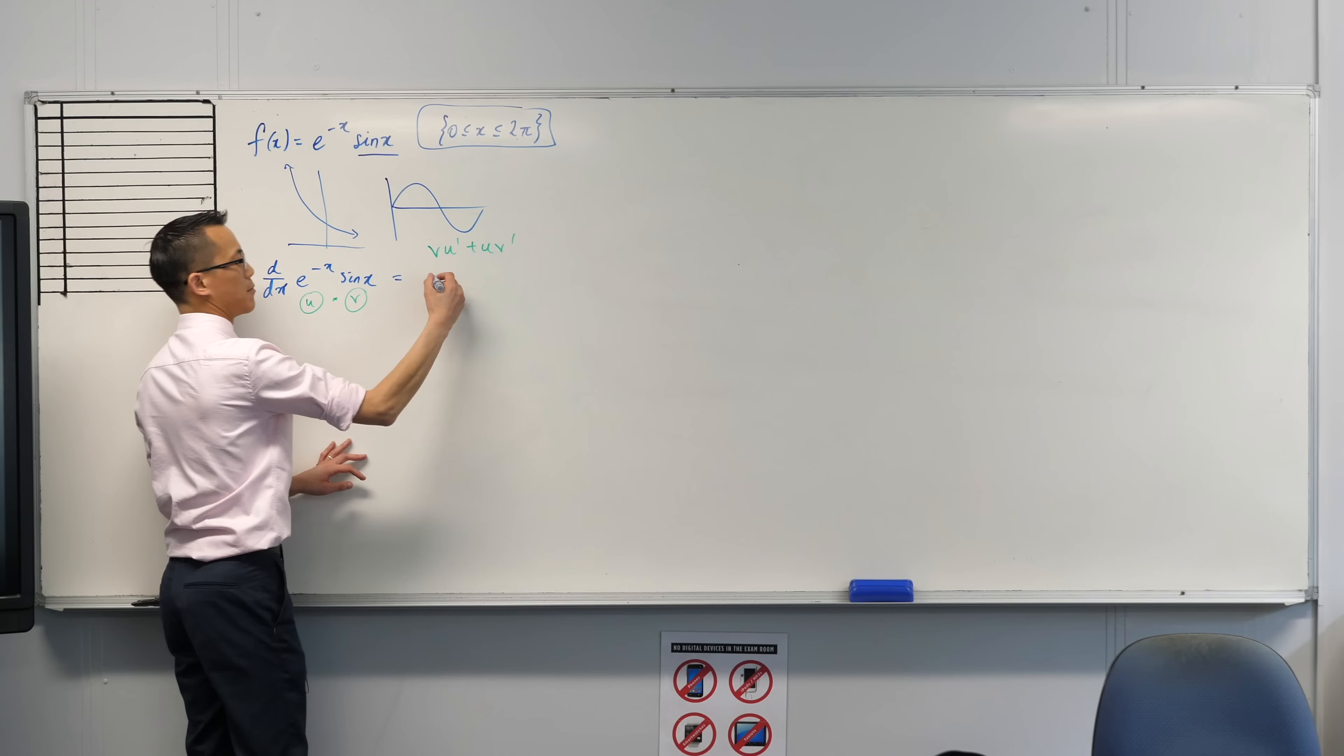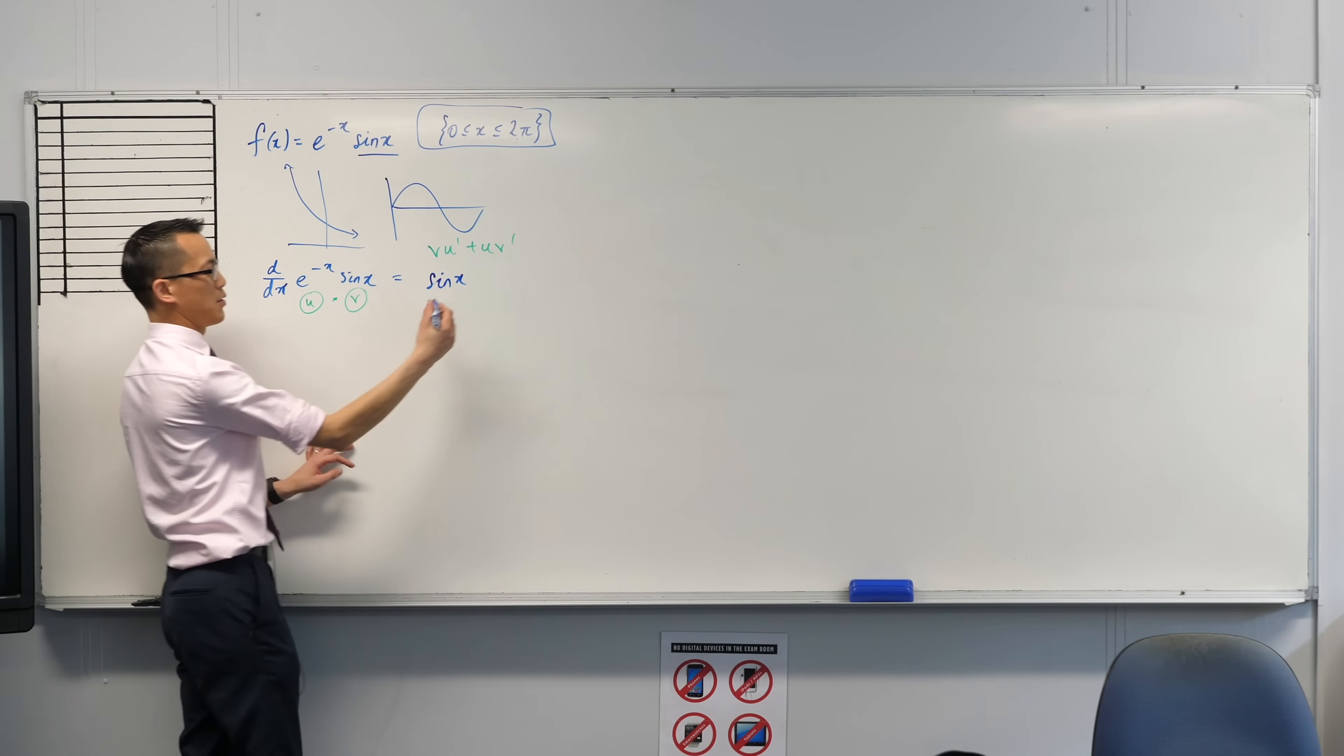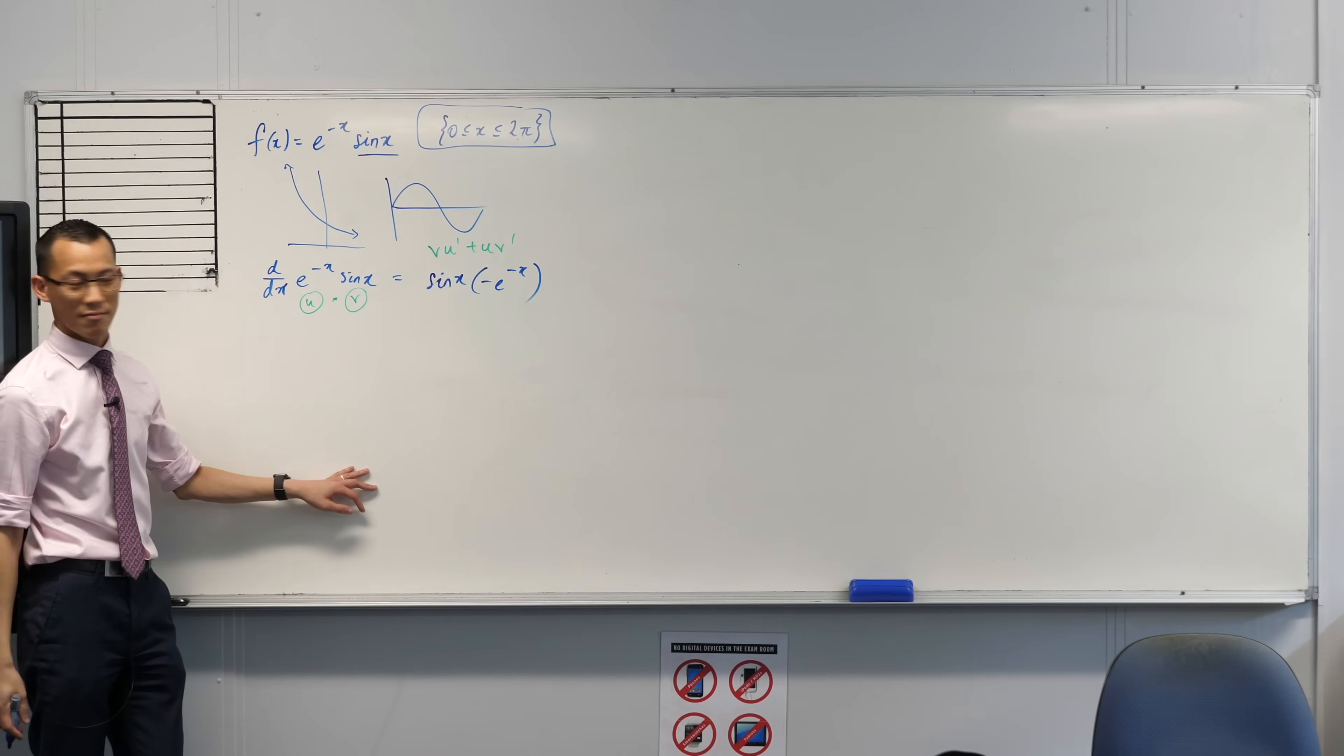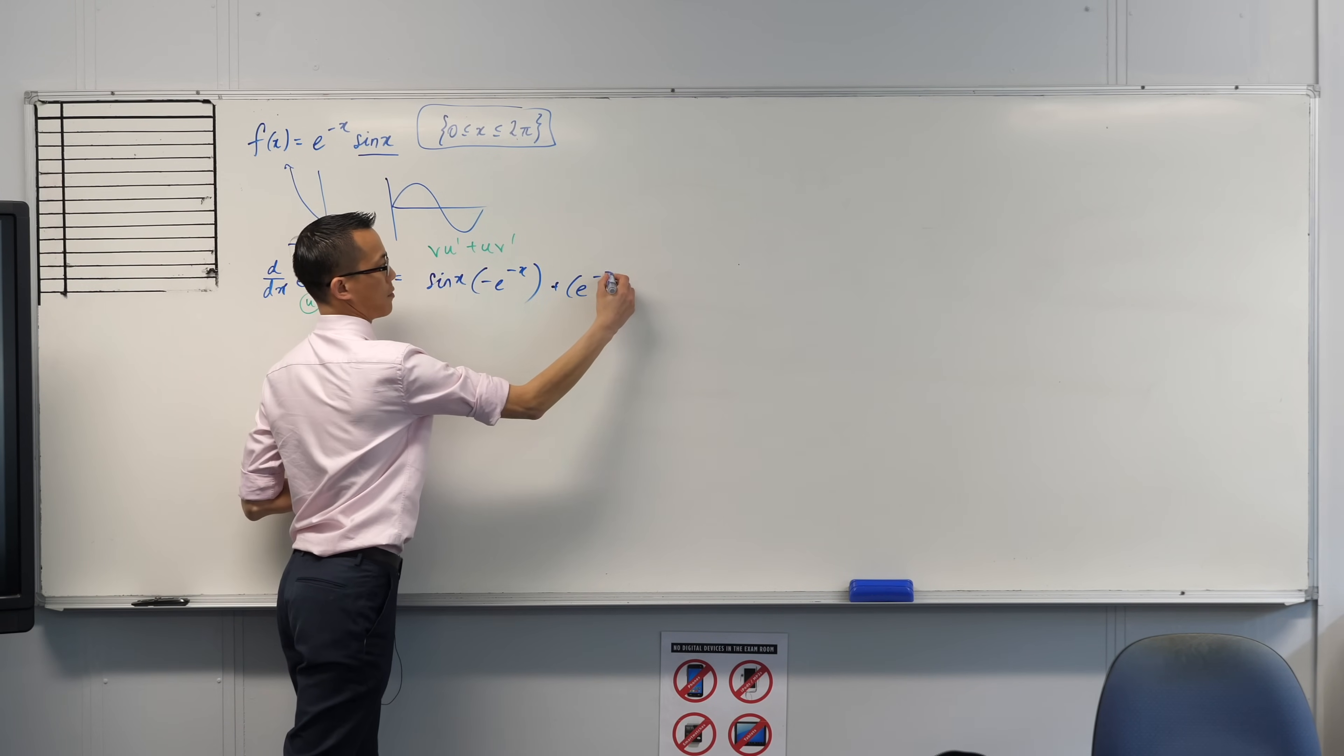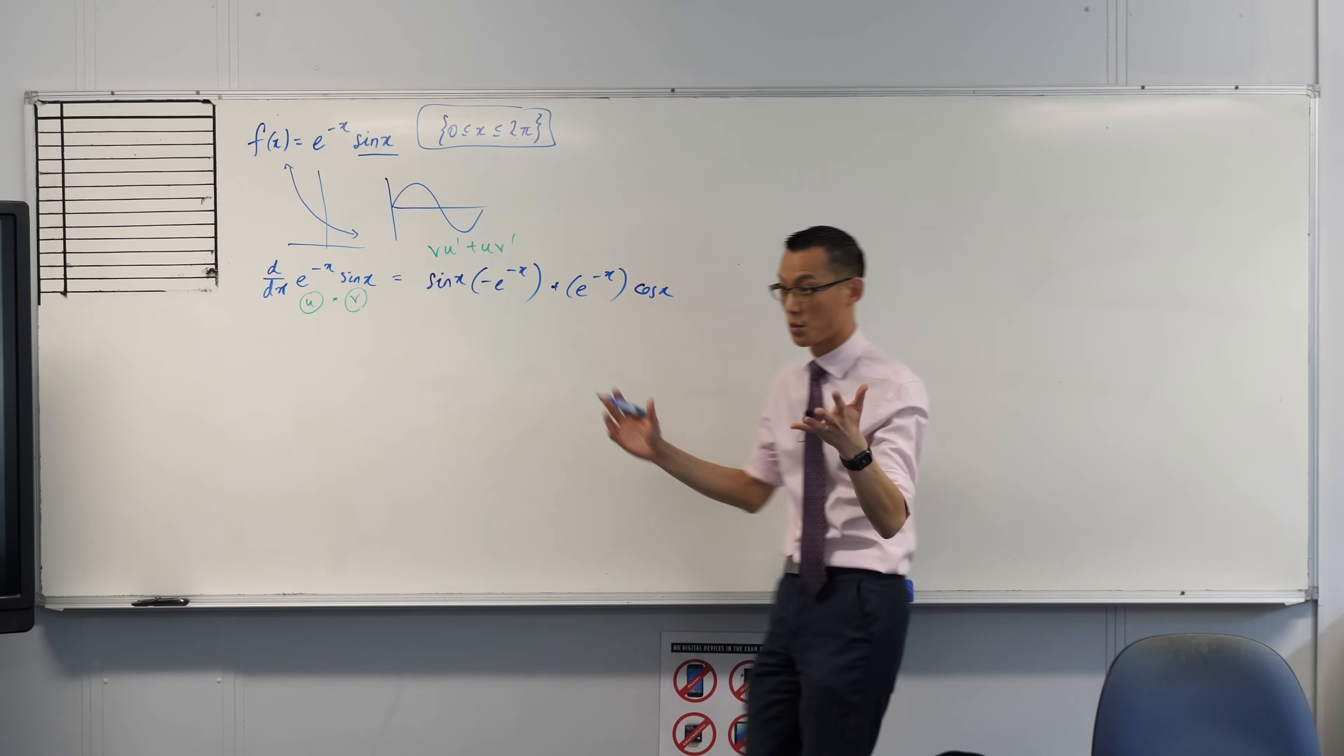Students at this point are pretty familiar with what we call the product rule. This is something that's on the formula sheet, so students don't need to memorize this. There's v, here comes u dash. So there's a negative coming out from there. There's my u dash, here comes u, and then v dash, that's going to give me cosine. First line looks okay.